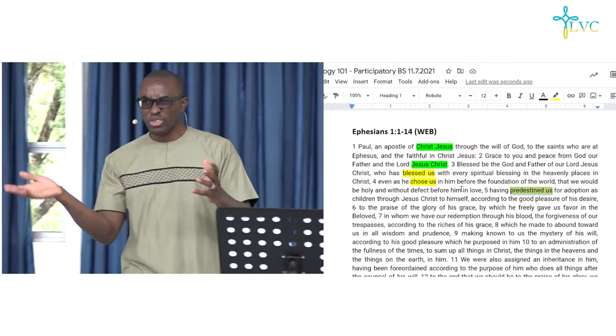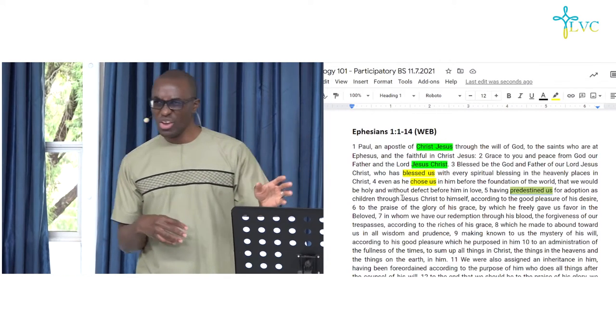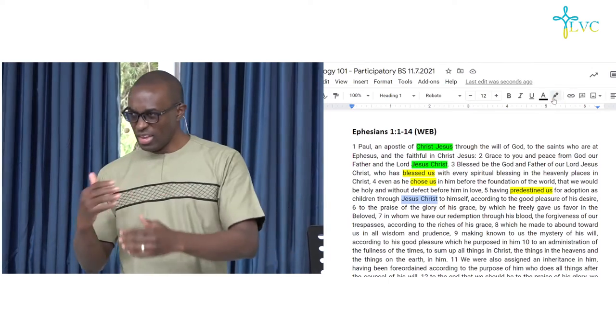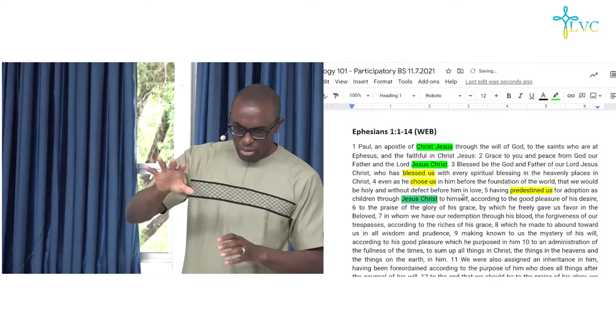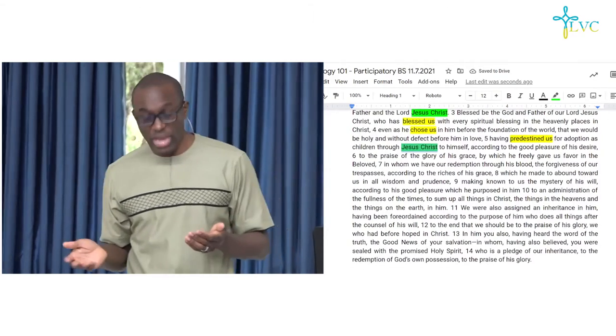And then, you also notice there are other parts of who. Like, there's a few times they say we or there's a few times they say our. So, those ones will just keep on highlighting those words. And then, those are just examples of ways that are helpful to identify repeated words.